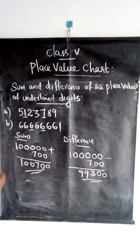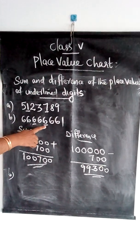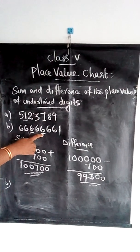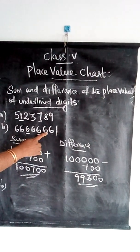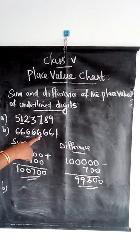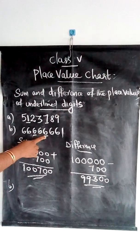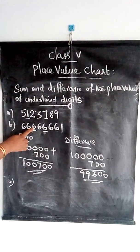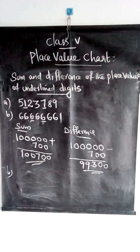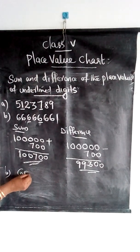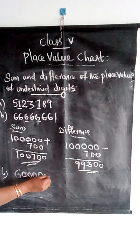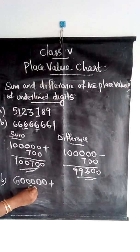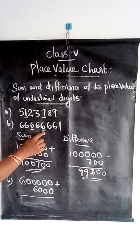Now the second question. Here, you need to find the place value of 6 — this 6 and this 6 also. The first 6: counting ones, tens, hundreds, thousands — so 6,000 is the place value of this 6. The second 6: after thousands comes ten thousands, then lakh — so lakh is its place value, meaning 6 lakh. So 6 lakh is the place value of this 6, and 6,000 is the place value of the other 6.